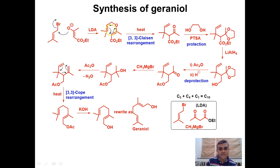The vinyl allyl ether is a Claisen substrate. When it is heated, it undergoes a 3,3-sigmatropic rearrangement and we get a rearranged product — so in this way we achieve an alkylation with rearrangement.